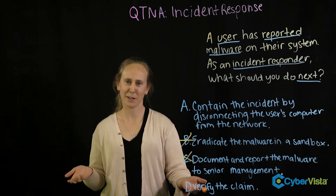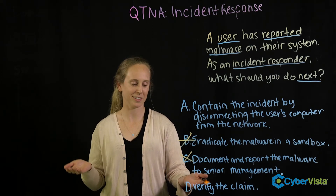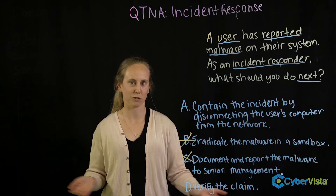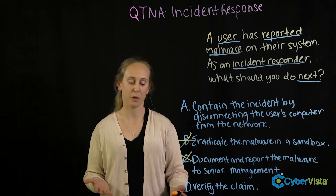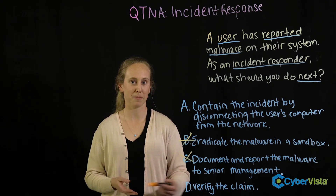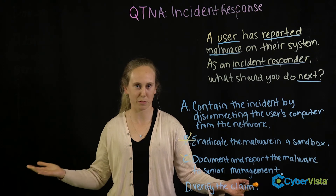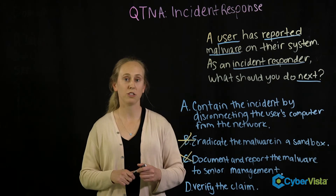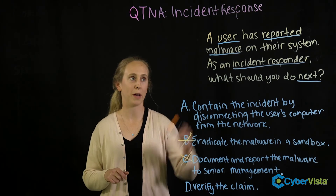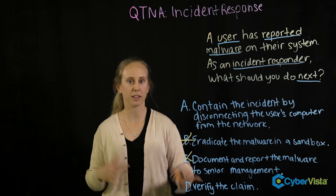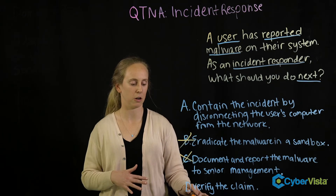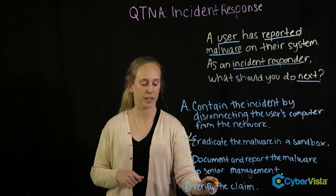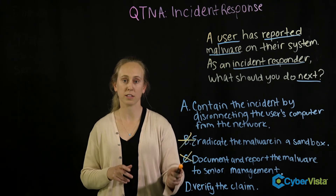Now we go to D: verify the claim. That language seems vague, but in CISM that's just how it is — the language is vague. What we need to do is go back to the question and fill in the blanks: verify the user's claim. That makes sense.